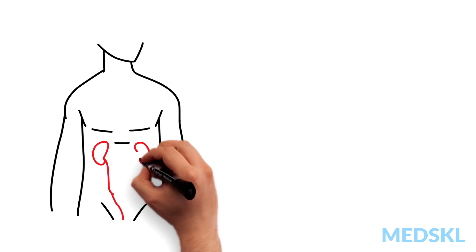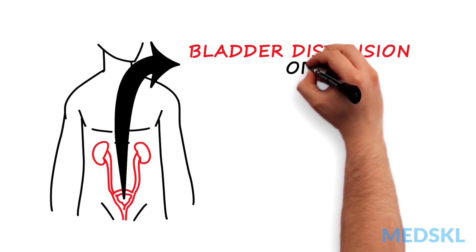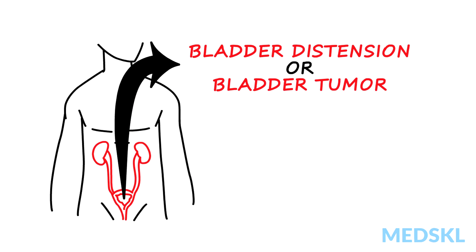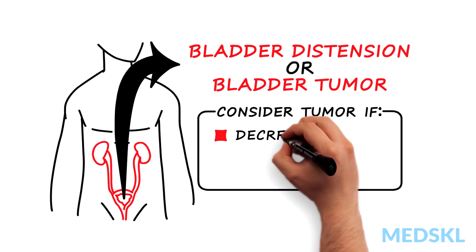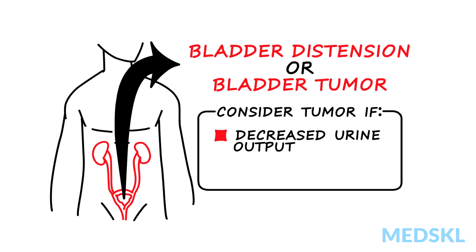A mass in the lower midline can be due to bladder distension or bladder tumor. Consider this in a patient with decreased urine output or gross hematuria.